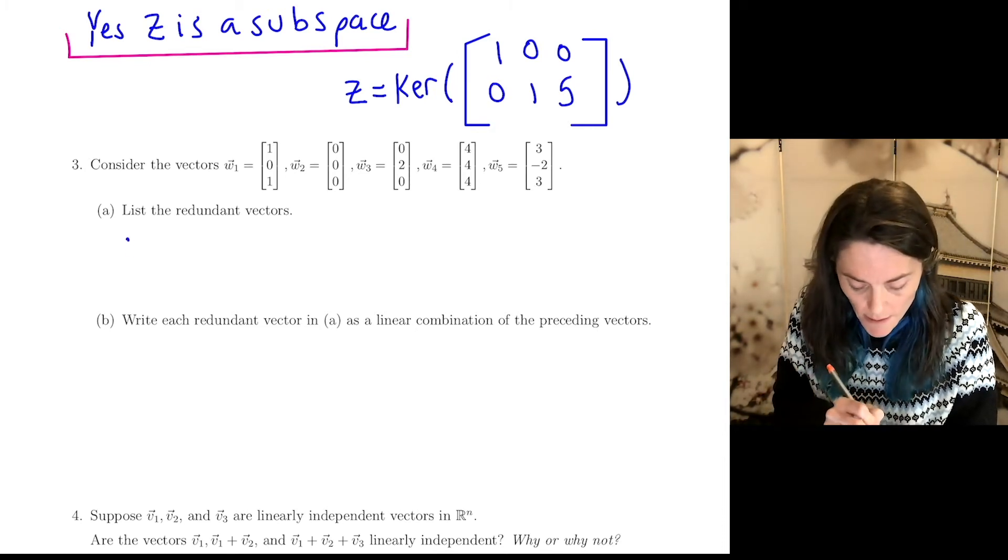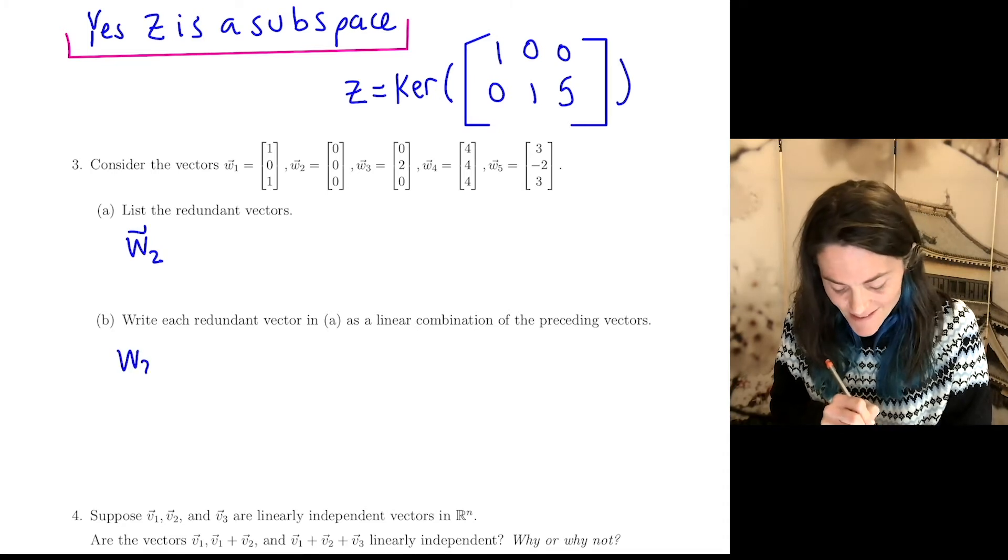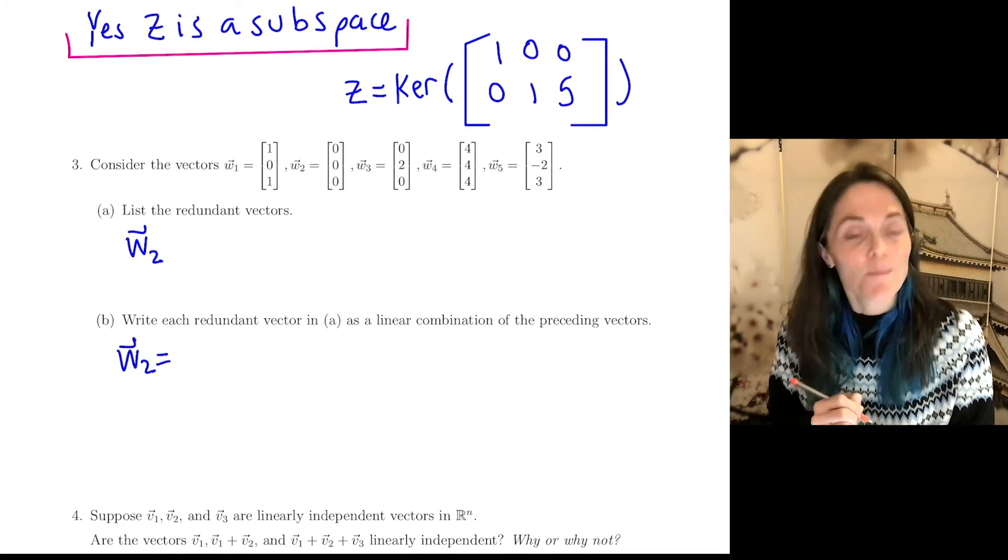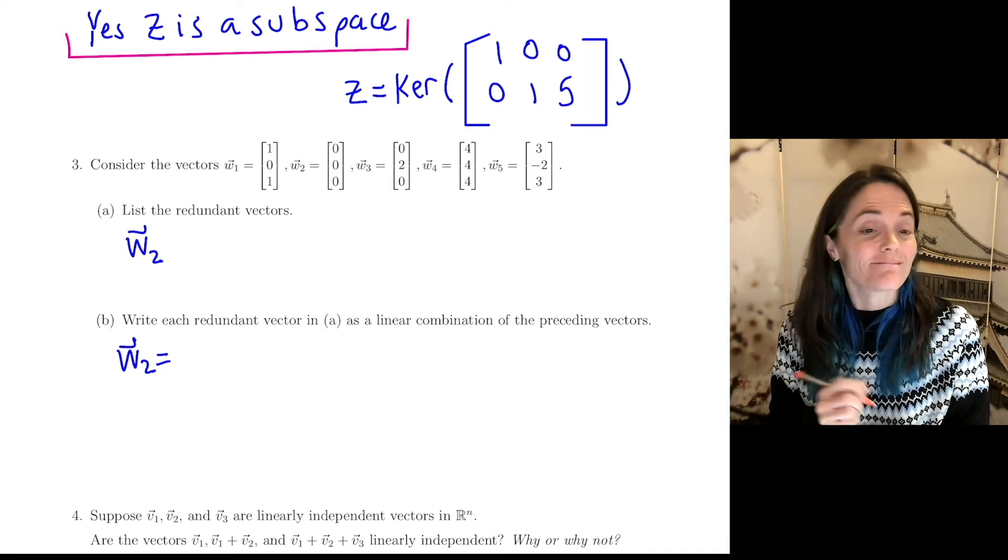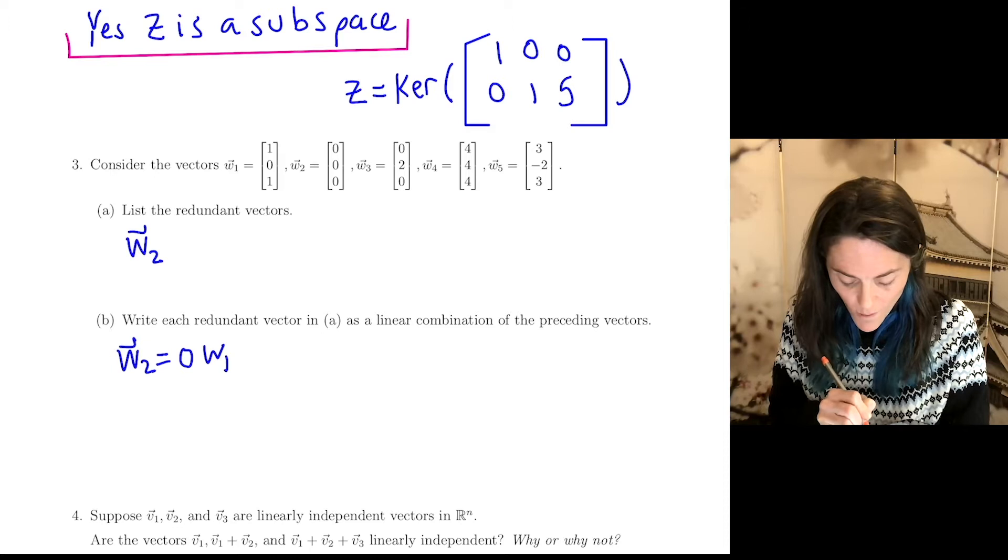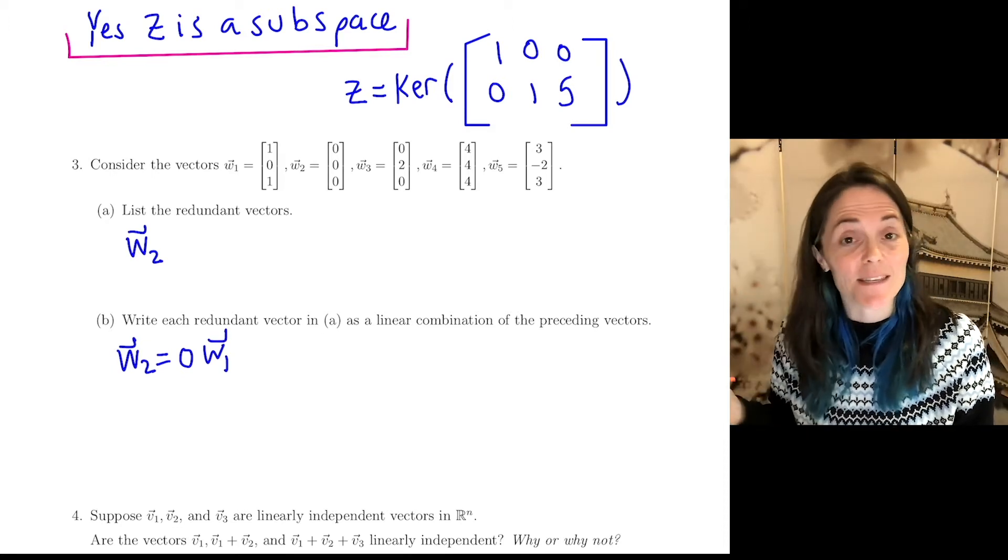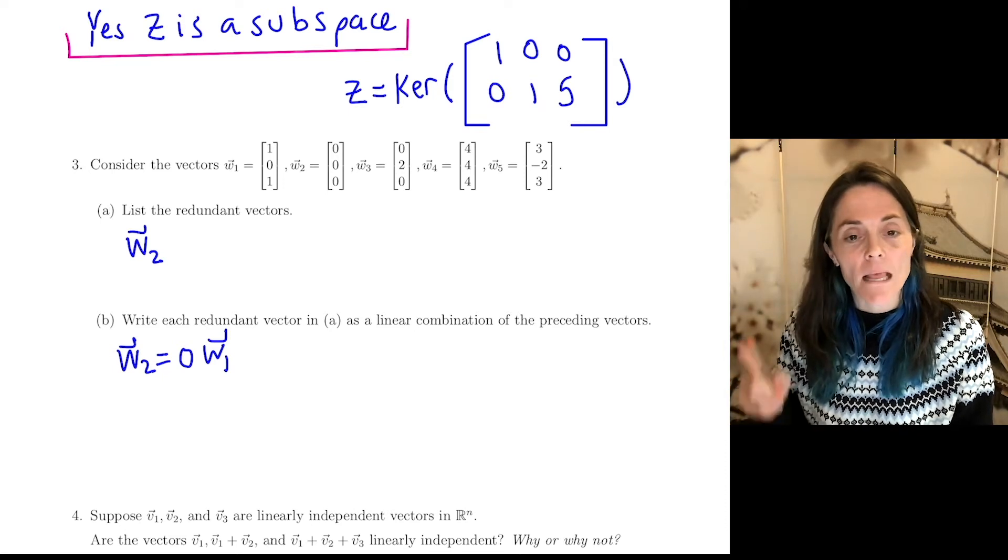But W2 is redundant. W2 is, without a doubt, redundant. In fact, we can solve part B as we solve part A. W2 is redundant, because W2 is 0 times W1, and 0 times any vector gives you the 0 vector.